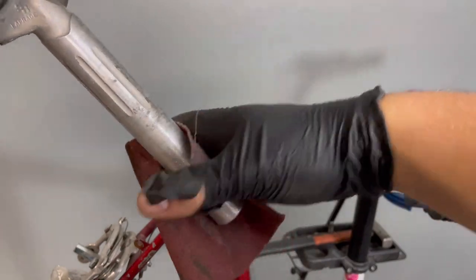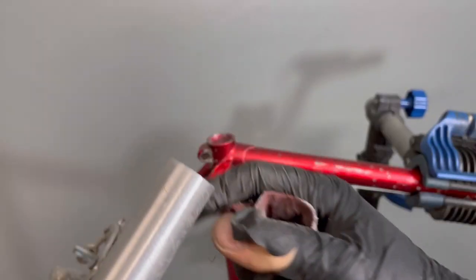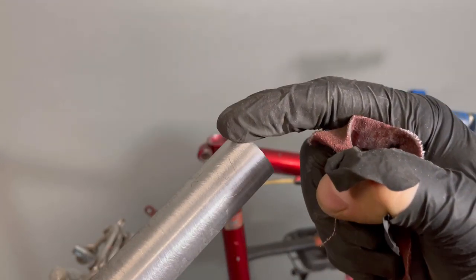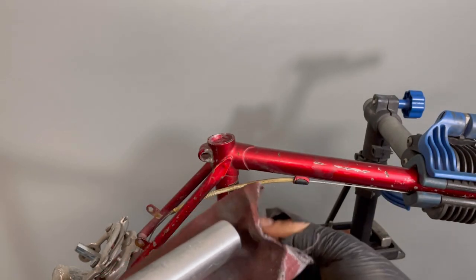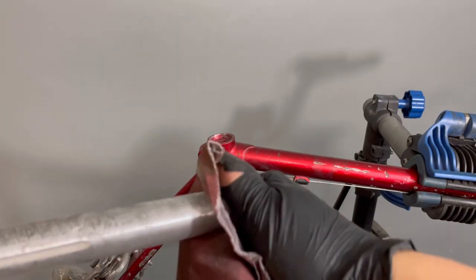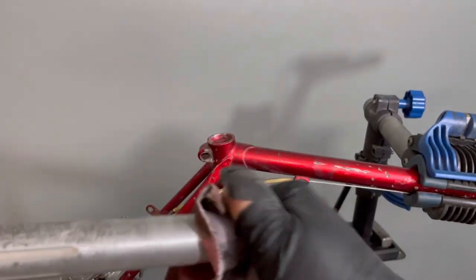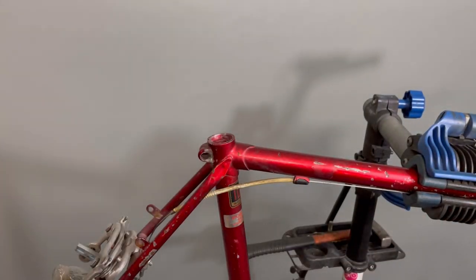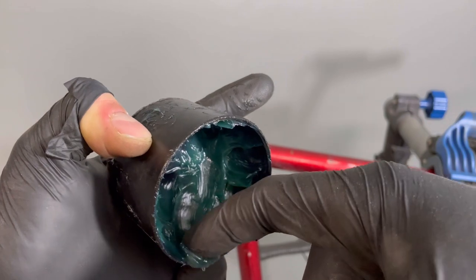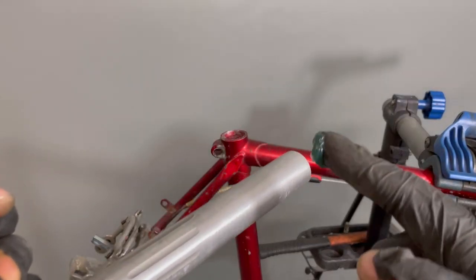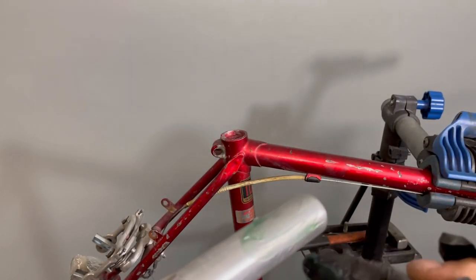It is worth getting rid of the burrs on the edge of the aluminum seat tube. And of course, lubricate it to prevent seizing.